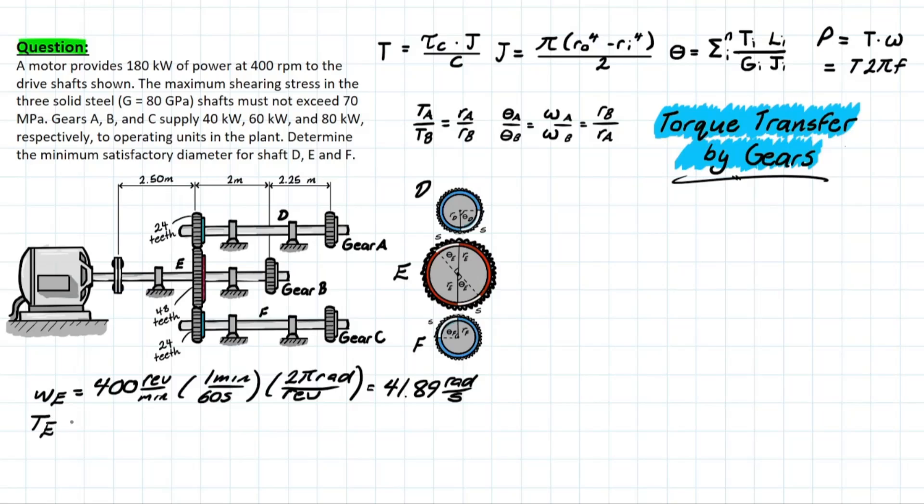Torque at E will be simply the power at E over the angular velocity. We have 180 kilowatts, so we need to do 10 to the 3, and that will be newton meter per second over what we just solved for, which is 41.89 radians per second. So, radians being a unitless convention, we are finally left with a value of 4,297.2 newtons per meter.